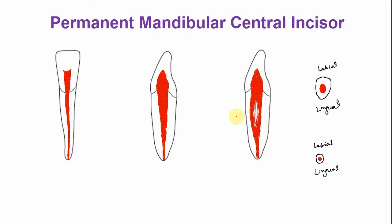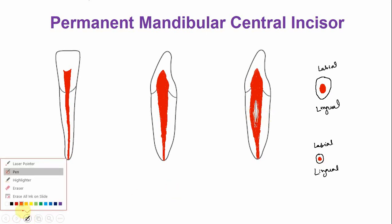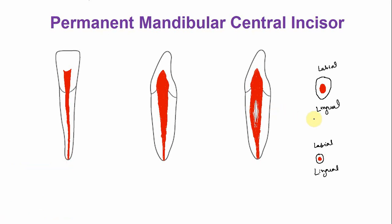Now a section taken at this portion shows how the pulp cavity will appear. This is the labial side and this is the lingual side. Two canals will appear, and those are nearly rounded — one and two — and a thin dentine tissue will be present between these two canals. A thin dentinal bridge or dentinal tissue will be present between these two canals.